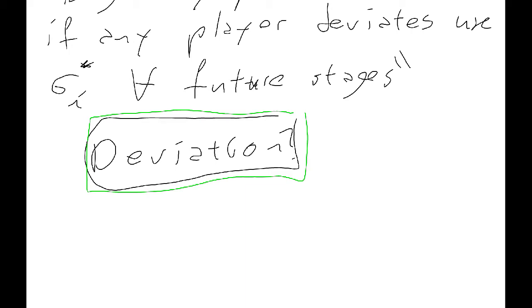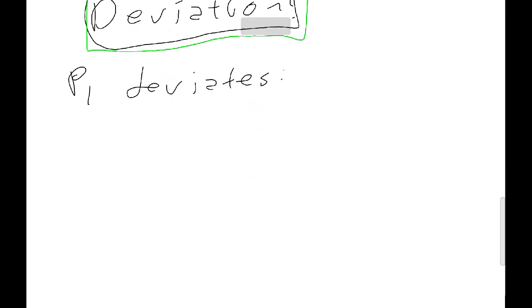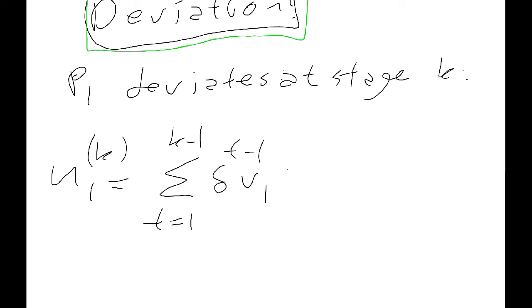If player 1 deviates, so without loss of generality, consider player 1. So, player 1 deviates, then their utility will be this. So, their utility, if they deviate at stage k, then their utility to player 1, deviating at stage k, will be simply going from the start to the stage just before they deviate. We discount, and they get v1, which is just the individually rational payoff.